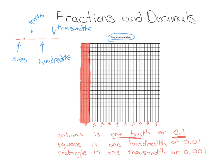The next thing is, if we look at a square — when I say a square, I mean this amount. How many squares fit into this whole thousandths grid? You're going to notice that you've got ten going down, ten going across. So if you took the time to count all these big-sized squares, you're going to notice there are actually 100 of them. So one square is one-hundredth, or we can write it as 0.01.